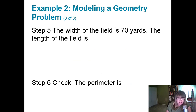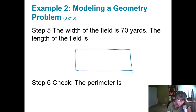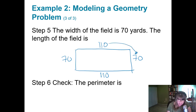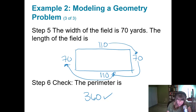Now let's check: walking around the perimeter, the length was 110, width is 70, another 110, and 70. So 110 plus 70 is 180, plus 110 is 290, plus 70 is 360. The perimeter is indeed 360, and the dimensions are 110 feet by 70 feet.